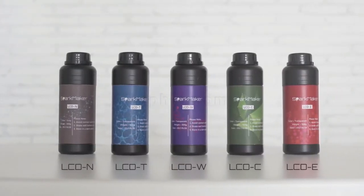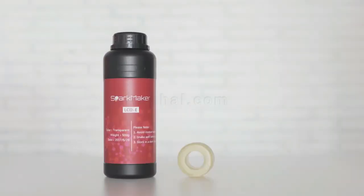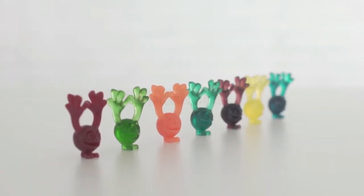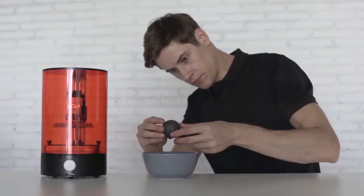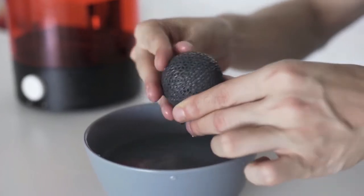SparkMaker comes with five types of resins for different objects you want to create. If you don't want to mess with typical resins, we also provide a special resin that can be cleaned by water directly.